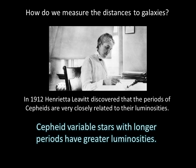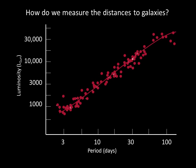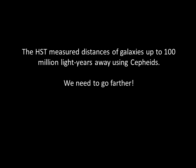In 1912, Henrietta Leavitt discovered that the periods of Cepheids are very closely related to their luminosities — the longer the period, the more luminous the star. We say that Cepheids obey a period-luminosity relation. If we plot the luminosity versus period of many Cepheids, we see this linear relationship: a Cepheid with a long period has a greater luminosity than a Cepheid with a short period. Once we measure the period of a Cepheid, we know its luminosity and we can use the inverse square law to determine distance.